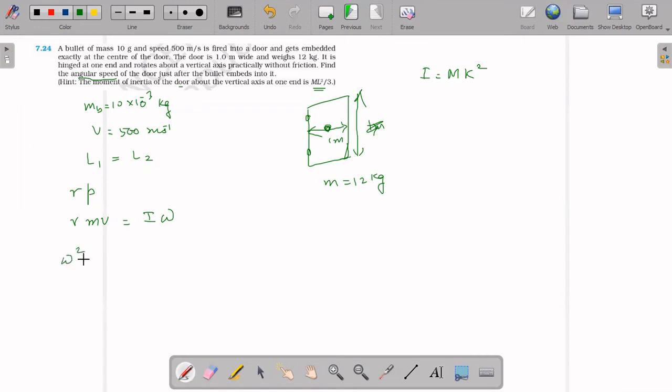Equal to r into m v by I. I is nothing but m l squared by 3, where m is the total mass, the mass of the door.